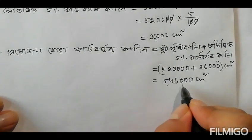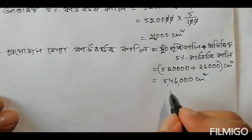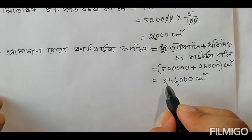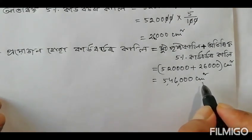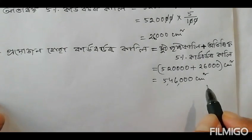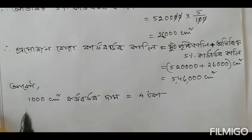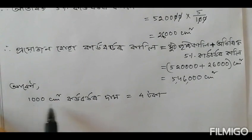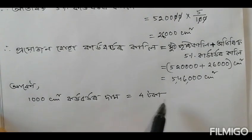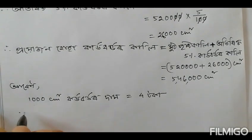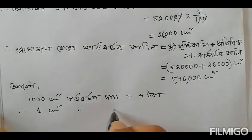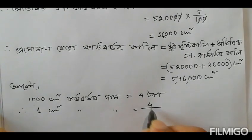Which is 546,000 cm². So we have to add more cardboard. Let's add it: the cost is 4 × 1000, based on the given rate per 1000 cm² of cardboard.